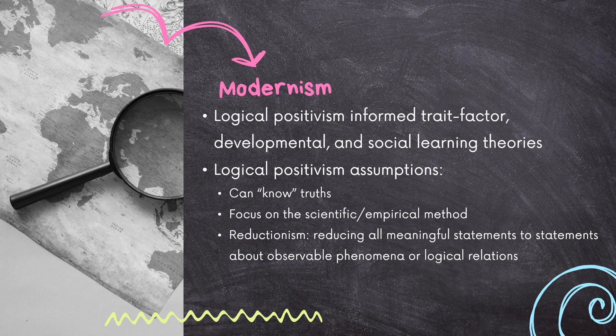Before talking about postmodernism, it's important to attend to modernism. What was this philosophical ground on which all those previous theories were developed upon? Modernism concerns itself with a logical, positivist way of looking at life and human behavior. It has served us well in disciplines such as health sciences, physics, chemistry, and biology. But when it comes to social sciences, it starts to feel a bit shaky and unreliable at times.